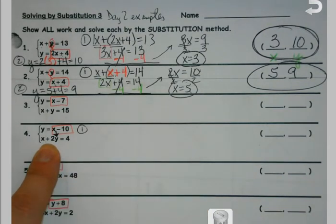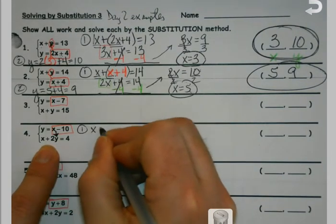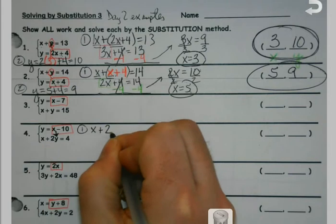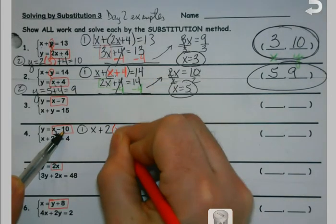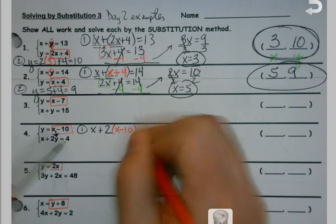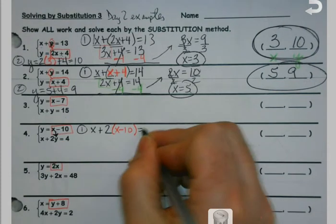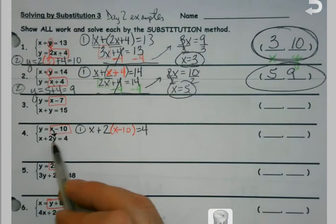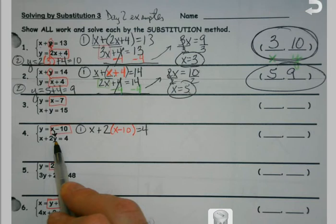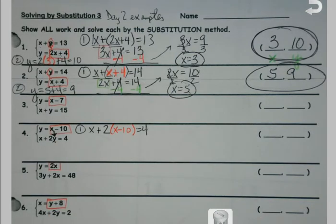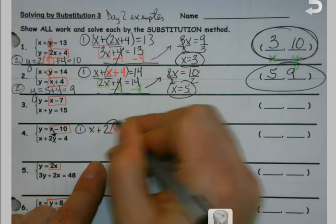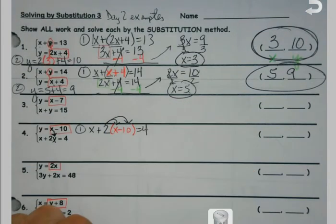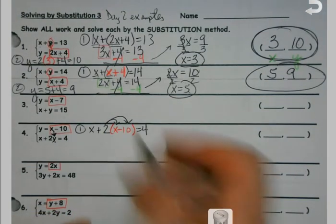So when I'm doing this one, I've got x plus 2. My y is being replaced by what's in the box. But notice the 2 is still there. The only thing that got replaced is this. So I do have one extra step this time because that 2 gets distributed to the x and to the minus 10. Then everything else will be the same.